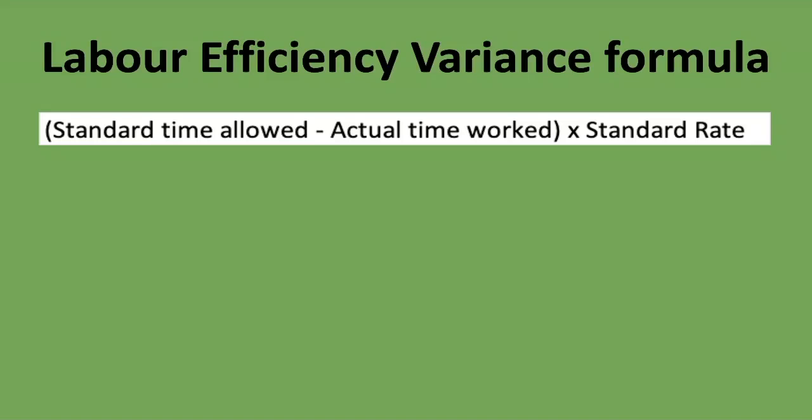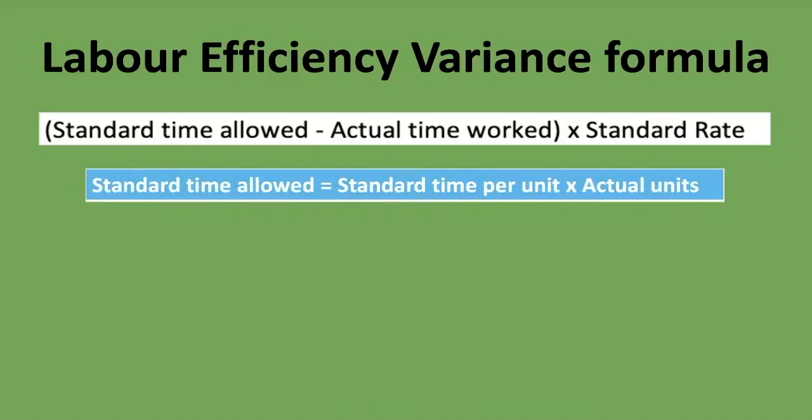To get the standard time allowed, you take the standard time per unit (or standard hours per unit) and multiply it by the actual units that you produced. So: Standard Time Allowed = Standard Time per Unit × Actual Units Produced.